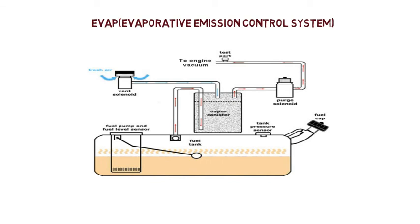So all the fumes formed in the fuel tank are used as fuel due to the vapor canister present in the EVAP system. This way, all the fumes are used completely and there are no evaporative losses. Additionally, it contains a vent solenoid which is the source of fresh air, which occupies the empty space created by the used fuel — which otherwise would create a vacuum inside and would collapse the fuel tank.